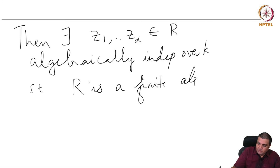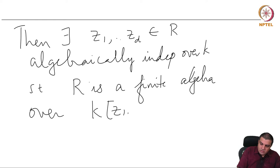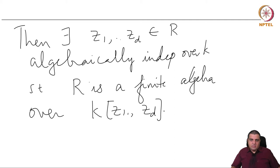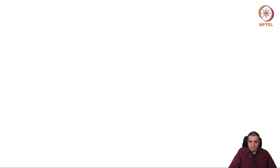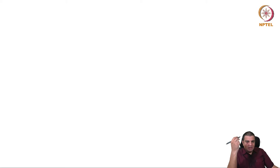In other words, as a module it is finitely generated — a finite algebra over this subring, which itself is a polynomial ring, because it is algebraically independent. We saw a proof of this last time for algebraically closed fields, for infinite fields, where we did a change of coordinates, and the change of coordinates ensured that some element — some relation among the generators of R — can be written in a monic polynomial form. And once a relation among the generators can be written using a monic polynomial, it says that one of the generators is integrally dependent on the other, and hence the morphism is finite.